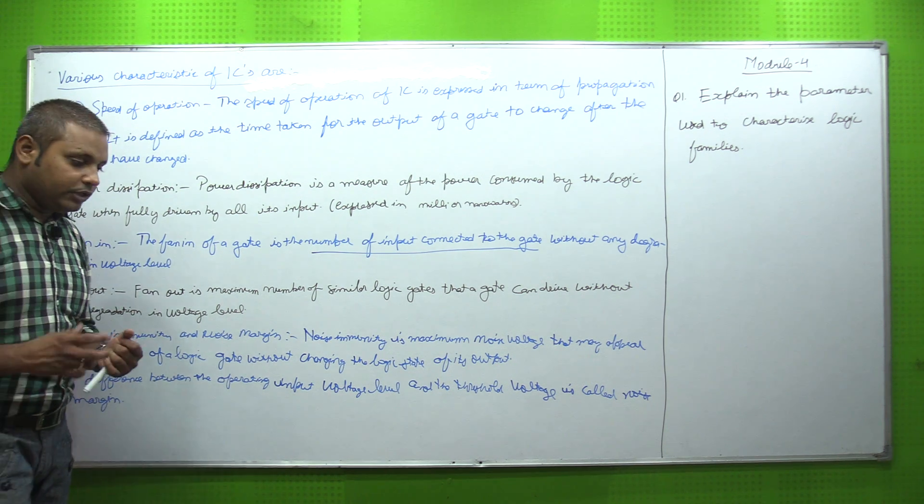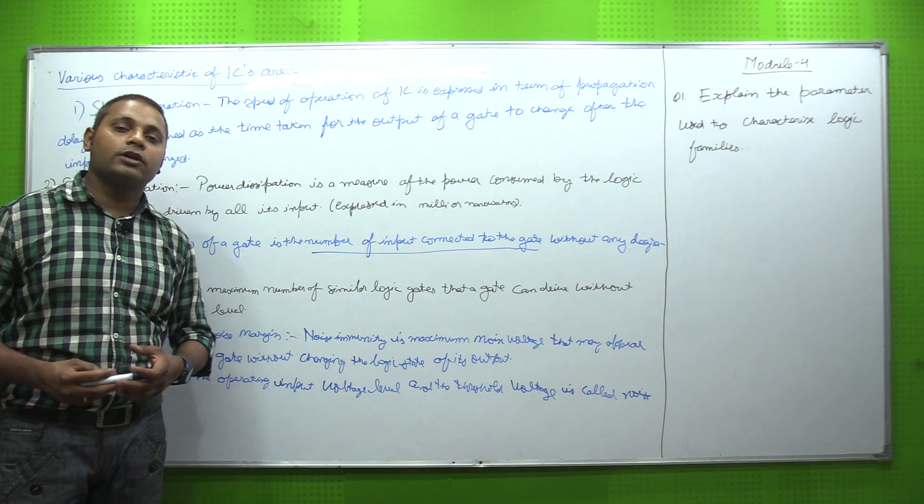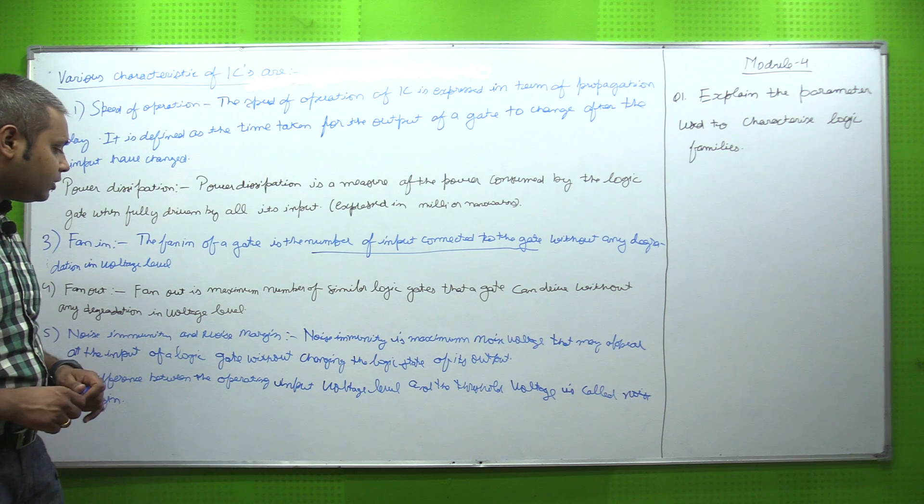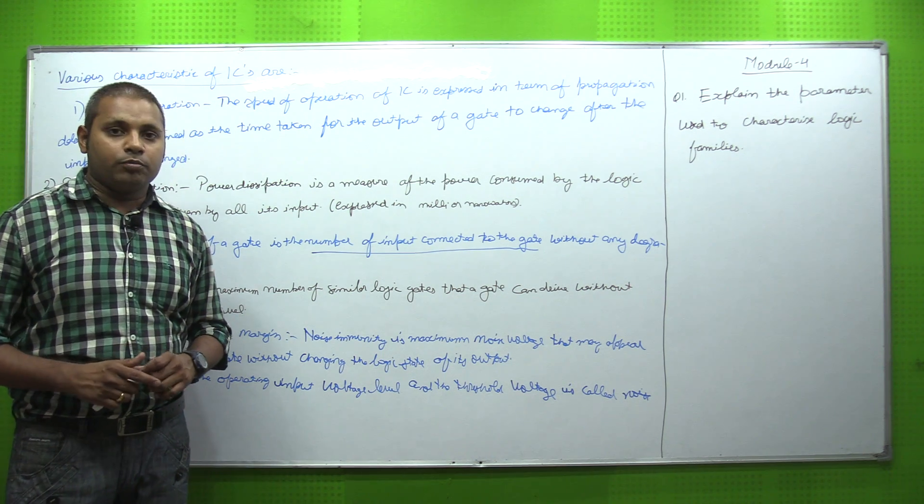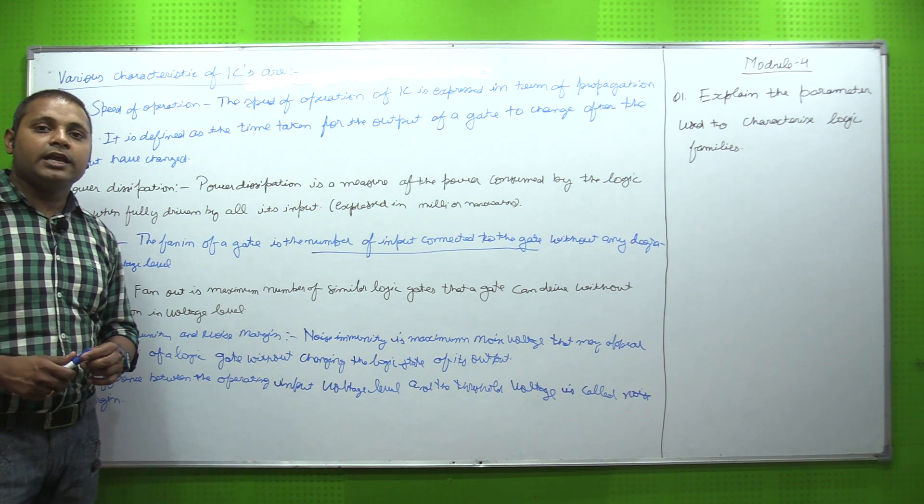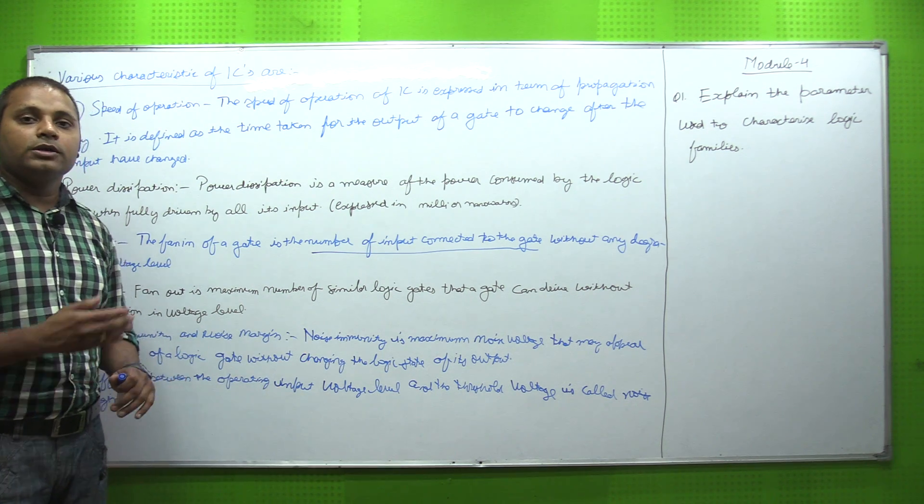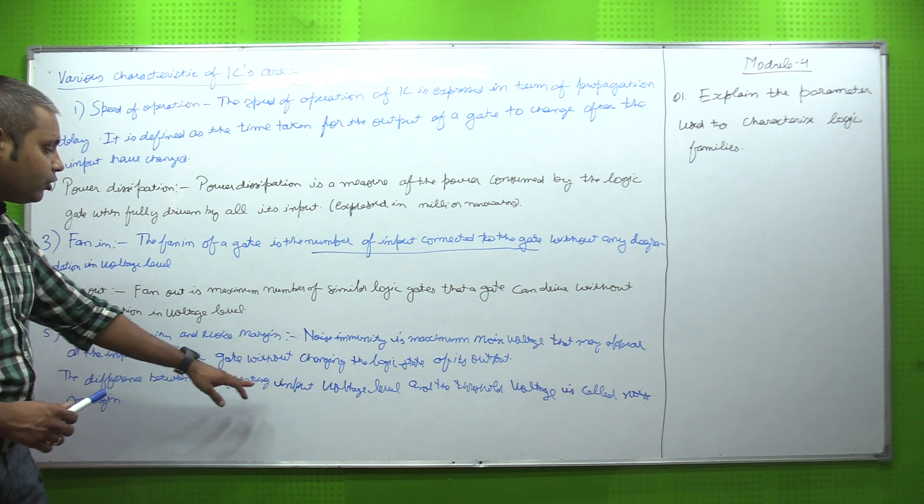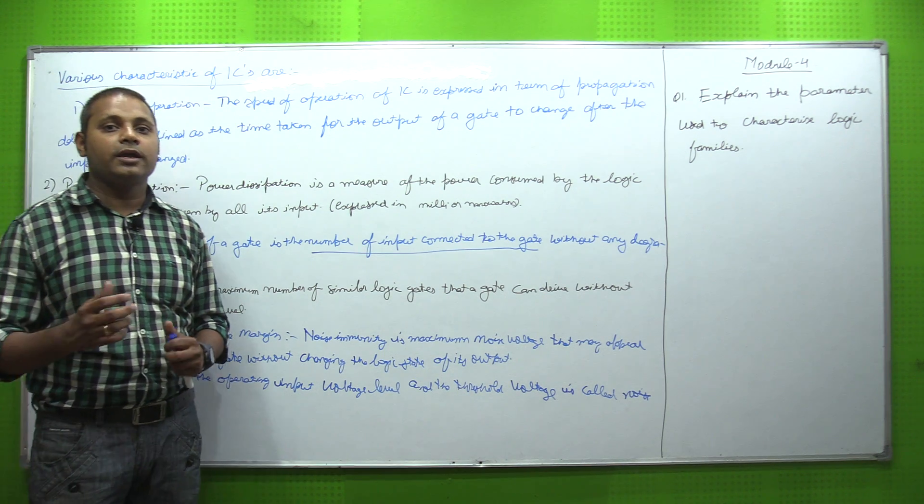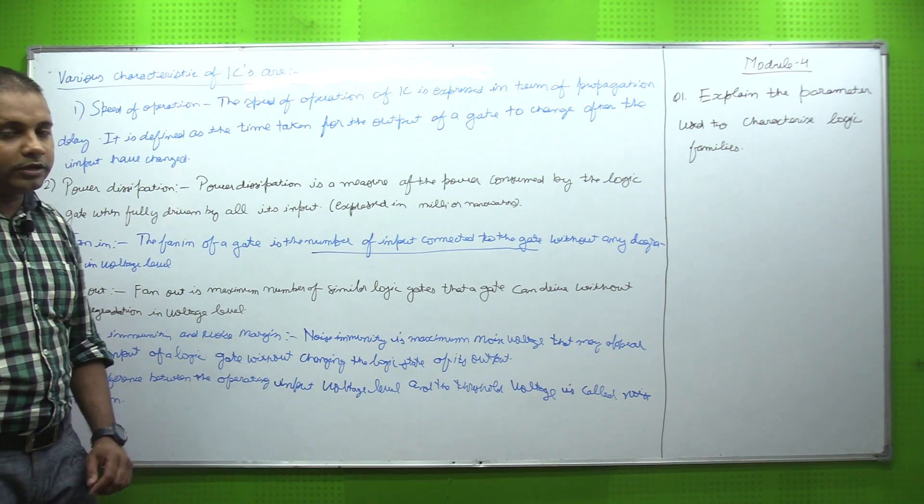The next one is noise immunity and noise margin. We know noise in a system is nothing but an unwanted signal. Unwanted signals have to be removed - that is noise. Noise immunity is the maximum noise voltage that may appear at the input of the logic gate without changing the logic state of its output. This means the maximum noise voltage at the input should not affect the output. The difference between the operating input voltage and the threshold voltage is called the noise margin.